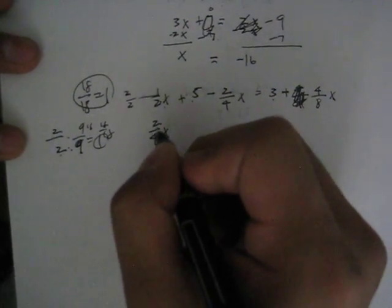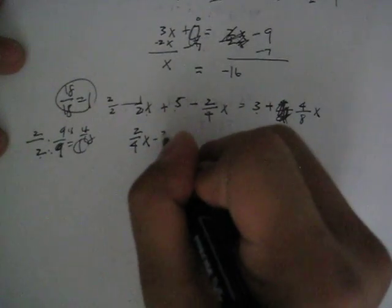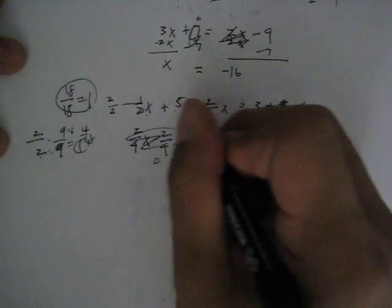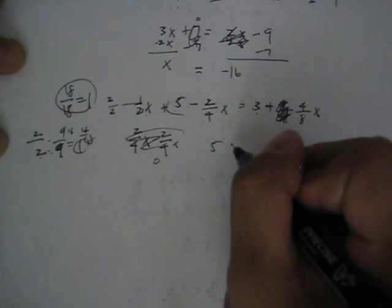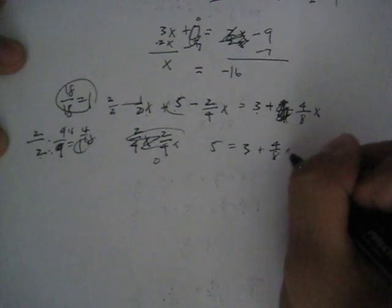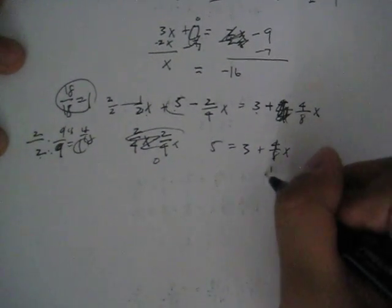Going back to our original problem, we have 2/4 - 2/4. They cancel out to 0. So we have only 5 on this side. 5 = 3 + 4/8x. And 4/8x, when you simplify it, becomes 1/2x.